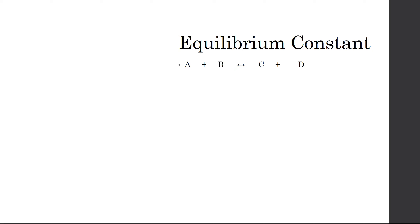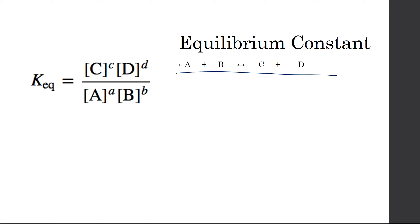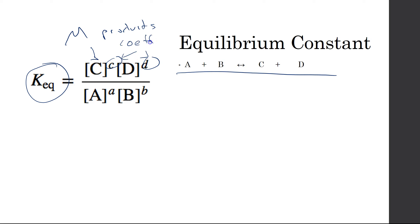Moving forward — the equilibrium constant, listed as Keq. The way we find Keq is by taking the molarity of our products raised to their coefficients as exponents, divided by the molarity of our reactants raised to their coefficients as exponents. It's a multiply-then-divide operation, and when you plug in molarity values at equilibrium, that gives you the equilibrium constant for a reaction.